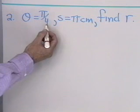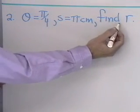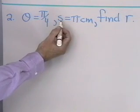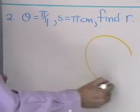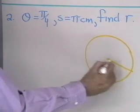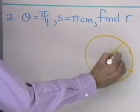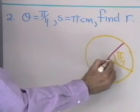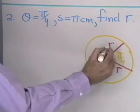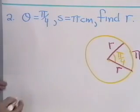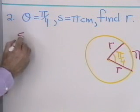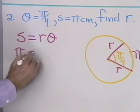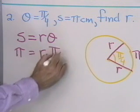For our next problem, θ equals π/4, and s equals π centimeters — let's find r. θ is a central angle in a circle with radius r, and θ cuts off an arc of length π. I'll draw a little picture: θ equals π/4, and I'm looking for r, the radius of the circle. I'm given s equals π centimeters. Let's use the arc length formula: s equals r times θ. So I have π equals r times π/4.